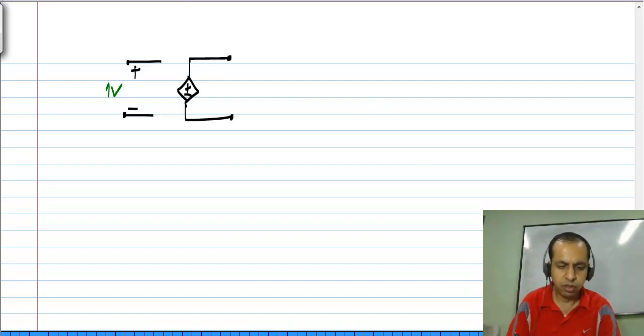What does this do? For instance, if we have a voltage controlled voltage source and between these if I have, let's say, 1 volt, and let's say for this voltage controlled voltage source k is 5, then between these two I will have 5 volts.